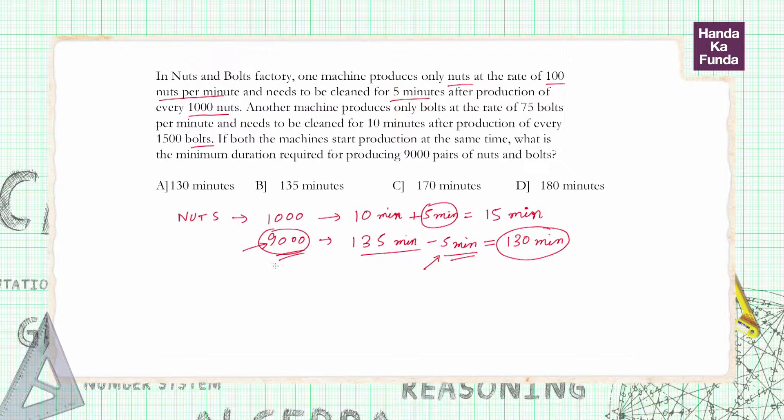Now let's use the same logic for bolts. We have a batch of 1500 bolts. It takes 75 bolts per minute, so for 1500 bolts, 1500 by 75, it will take 20 minutes per batch plus 10 minutes of cleaning period, so that means 30 minutes per batch of 1500.